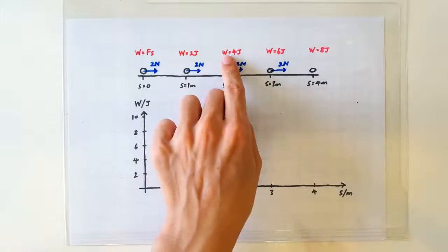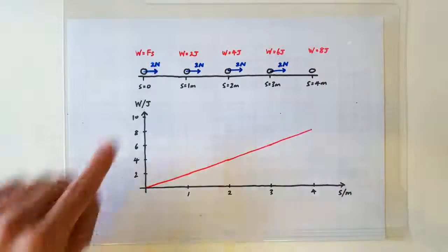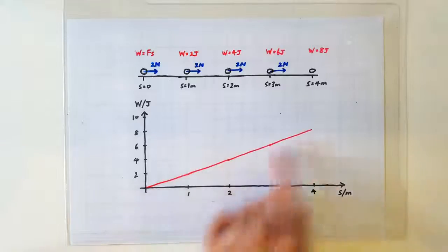After 2 meters, it will be 4 joules, 6 joules, 8 joules, and so on. If we plot the work done against displacement, we are going to get a straight line graph.